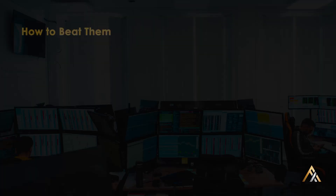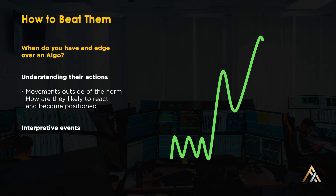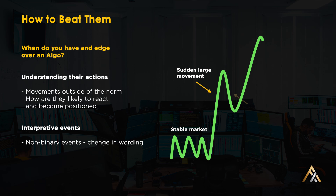To beat an algorithm, you've got to work out when you have an edge over it, which comes down to understanding their actions and what they'll do in certain situations. One of the greatest opportunities you have is that algorithms can't trade on non-binary events.